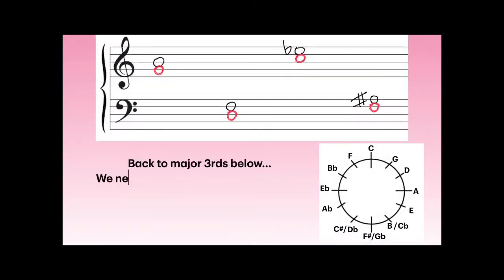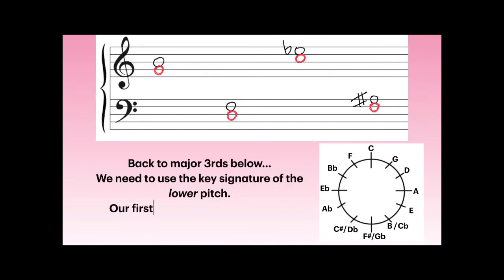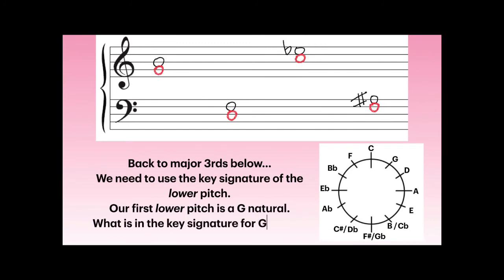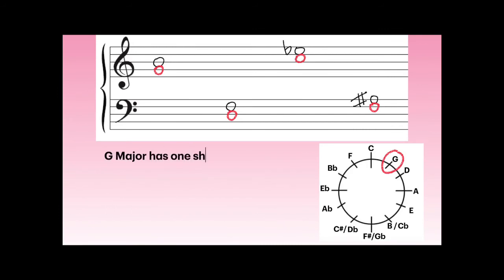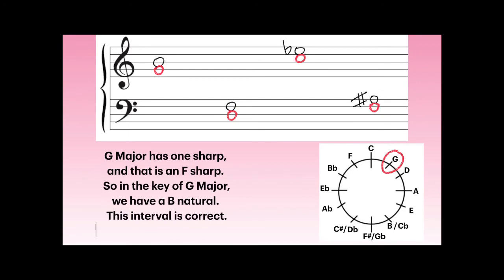Back to major thirds below — we need to use the key signature of the lower pitch. Our first lower pitch, which we wrote in, is a G natural. What is in the key signature for G major? One sharp, and that's an F-sharp. So in the key of G major we have a B natural. This interval is correct — a major third below B is G.